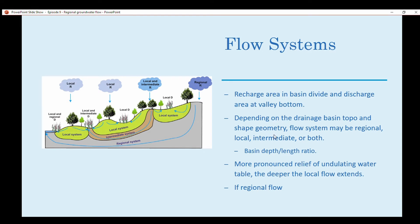Depending on the drainage basin topography and shape geometry, the flow system may be regional, local, or intermediate. Basin depth and length ratio can affect which one you'll have. More pronounced relief of undulating water table, the deeper the local flow extends.